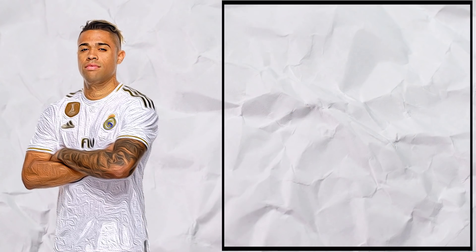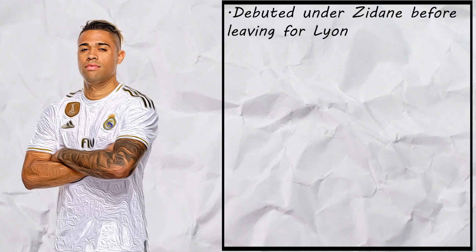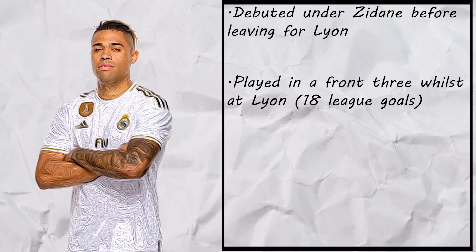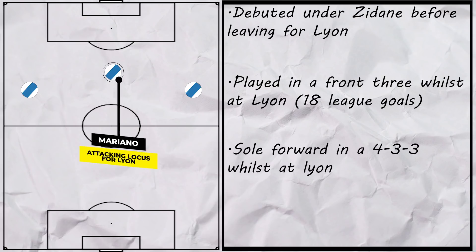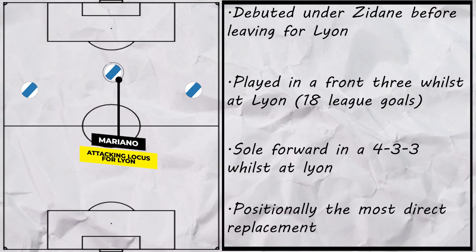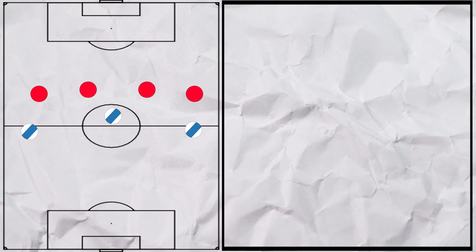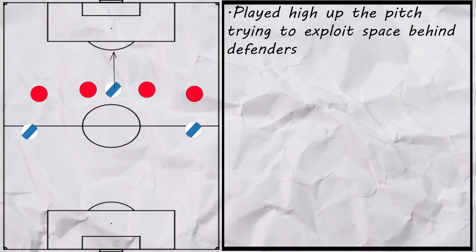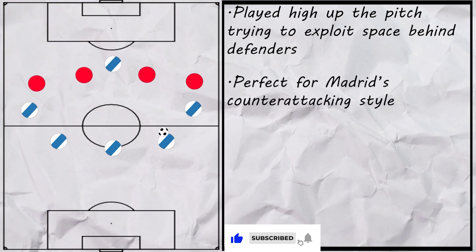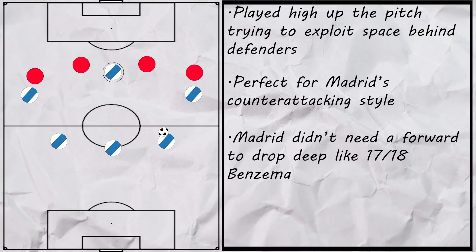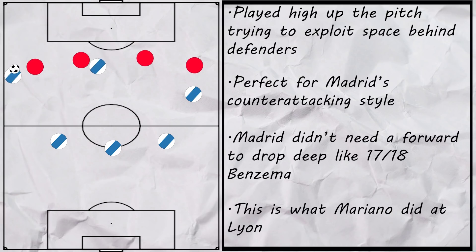We'll start with Mariano. He had been a Madrid product, even debuting under Zidane before leaving for Lyon. At Lyon, he formed a deadly trident alongside Fakir and Depay, scoring 18 goals in the league. He was the sole striker in a 4-3-3, so it was expected he would do the same thing at Madrid, making him positionally at least the most direct replacement. Like Ronaldo, he liked to play on the shoulder, using his pace and power to get behind the defence — ideal for the counter-attacking style. With Ronaldo gone, Madrid needed a more genuine number 9, and unlike Benzema, Mariano wouldn't drop and would rather be on the end of the moves instead.